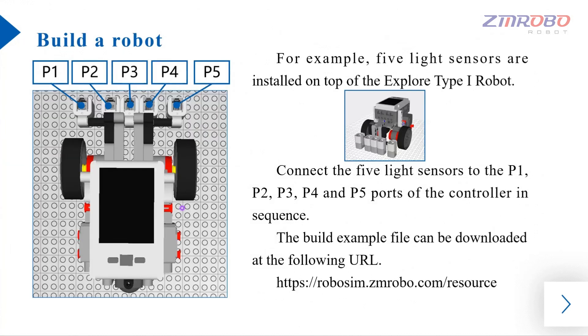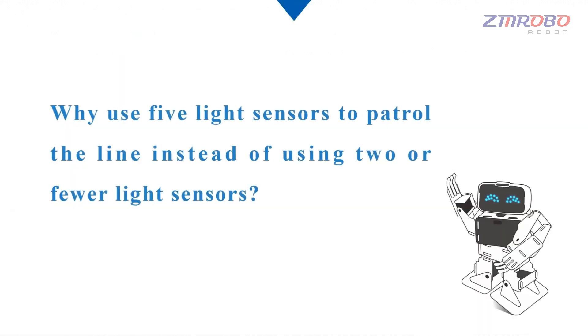Next, let's build a robot with 5 light sensors. We can install 5 photoelectric sensors on the Exploration One robot built in the software, and connect the 5 photoelectric sensors to the P1, P2, P3, P4, P5 ports of the controller in turn.